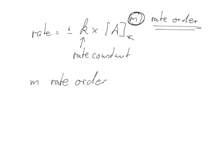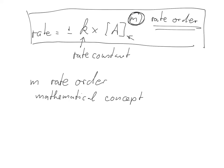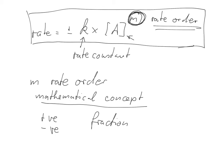What is very important is that m is simply a mathematical concept that allows you to describe this rate equation. The rate order, this m, doesn't do anything else. It is just an indication or a mathematical idea to make this rate equation work. M can be a positive number, it can be a negative number, it can be a fraction — it can be whatever number you can think of. That is what m, the rate order, is.